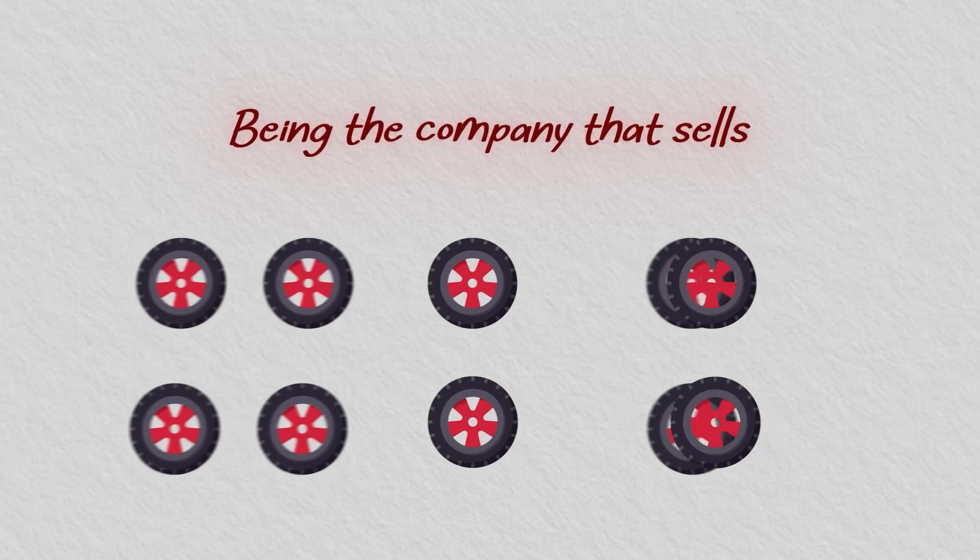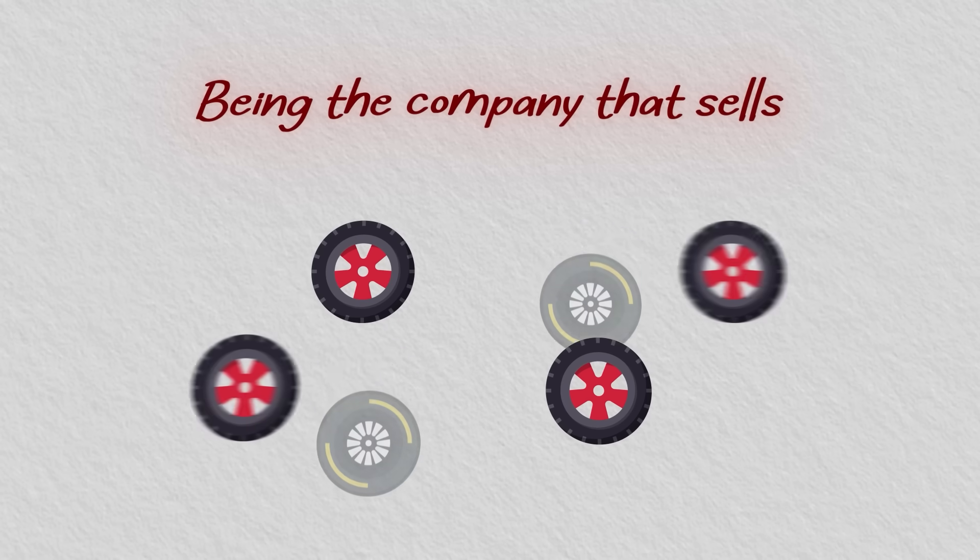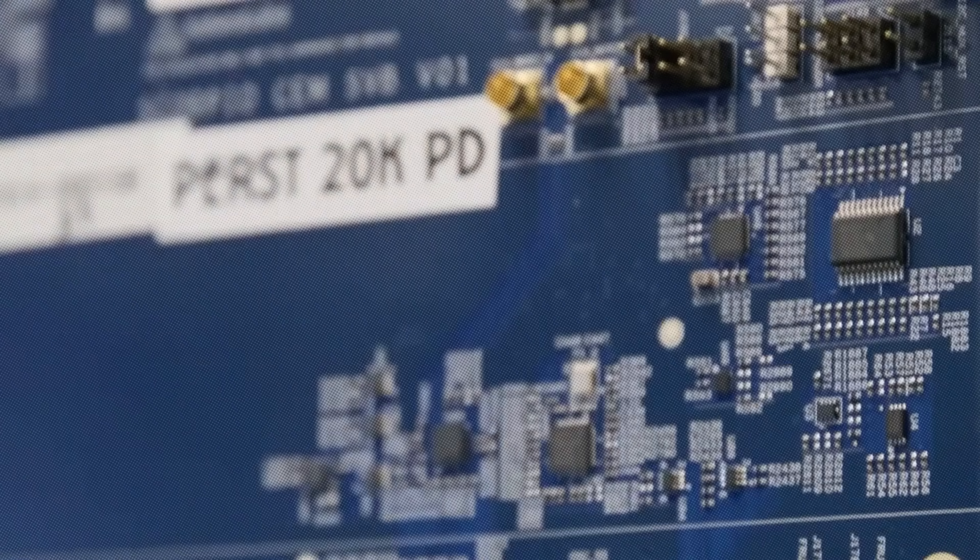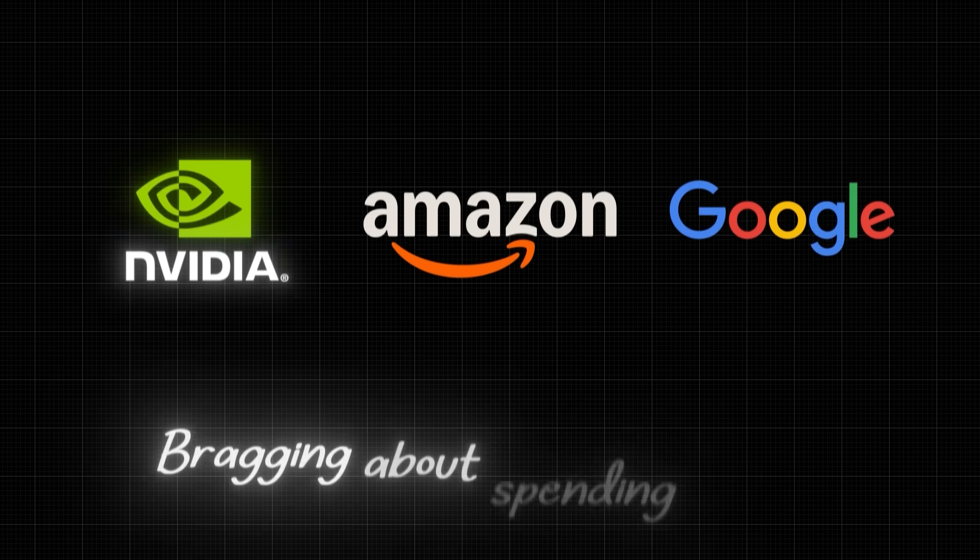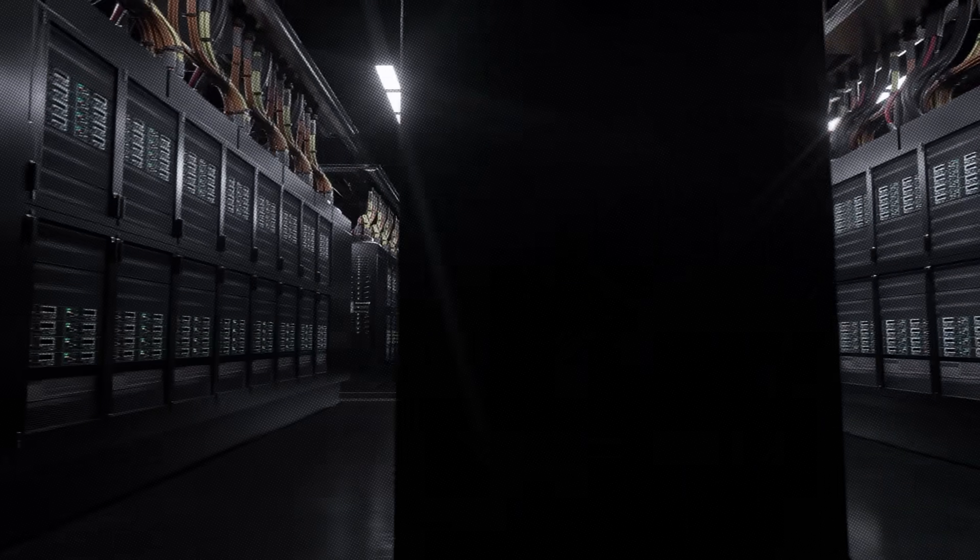It's like being the company that sells all the tires. Every car needs four, and they need replacing. Except in Astera's case, every new AI system needs their chips from day one. So now that every major tech company is bragging about spending billions of dollars on AI infrastructure...